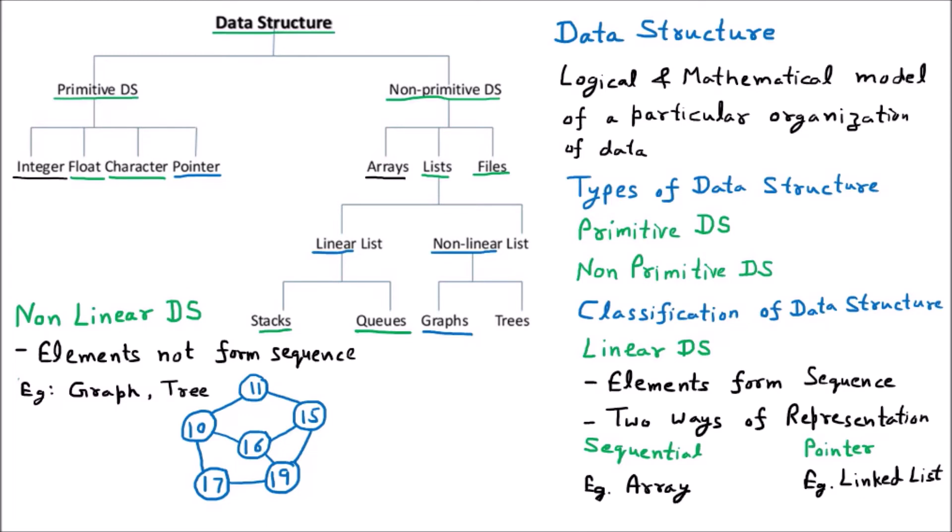That's why they are called non-linear because there is no fixed sequence. We can even start with the 11. We can start with this 11 and we can might go here. We can traverse the 10 or we can go on 16. Then we can even come back on 15 or we can go on the 19. Then we can go on 17. So that can be the order.